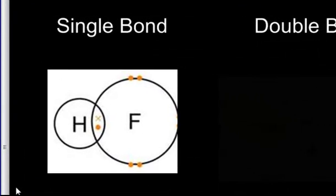For every pair of electrons shared between two atoms, a single covalent bond forms. For example, hydrogen has one valence electron and fluorine has seven. Fluorine wants one more electron, but hydrogen won't give it to him. Hydrogen wants one more to have two in its valence, but fluorine won't give it to him, so they're going to have to share. Notice in the diagram how both valences overlap, showing only the valence electrons. The formula for this molecule would be HF because it's a one-on-one sharing of electrons.